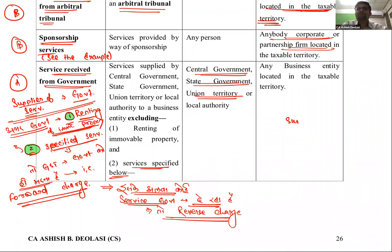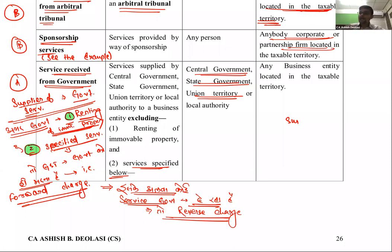पाँचवीं service — service received from government। Supplier है central government, state government, union territory, या local authority। अगर ये किसी business entity को कोई भी service देते हैं — any service — तो it would come under reverse charge, मतलब business entity को GST भरना है। इसमें दो exceptions हैं।